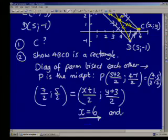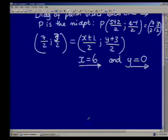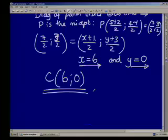And what will Y equal? Y plus 3 must give me 3. Actually, that should be 3 over 2. So I must actually get a 3 over here. What plus 3 gives me 3? Nothing. So the coordinates of C is the point 6,0.